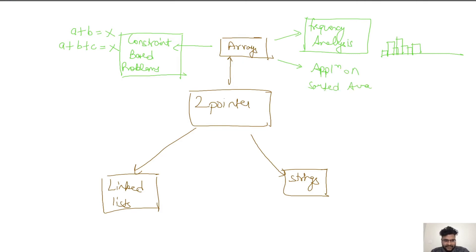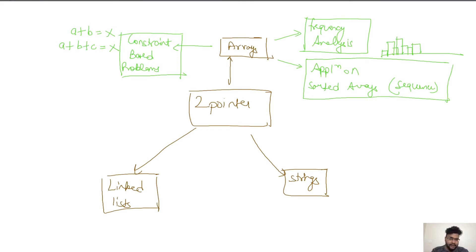When some kind of sequence is given in the question — for example, if two sorted arrays are given — we mostly use an index-based technique where we start from the beginning and move towards the end to get the answer through the given logic. In strings, there are also two different kinds of problems. The first is the text and pattern kind of question.